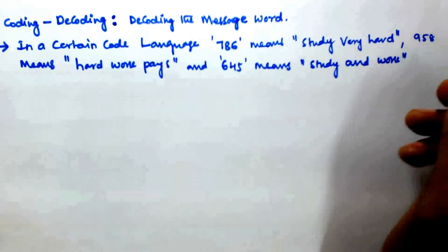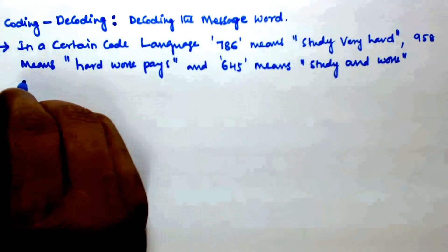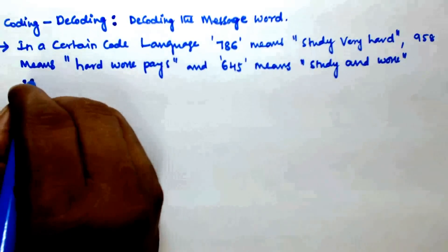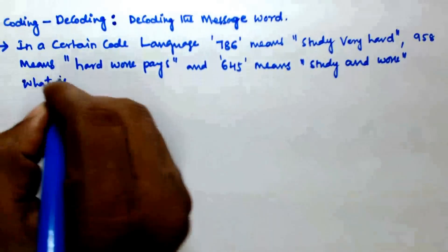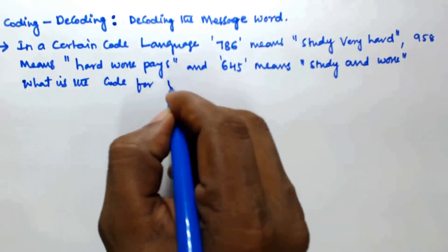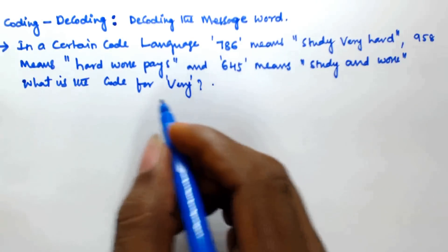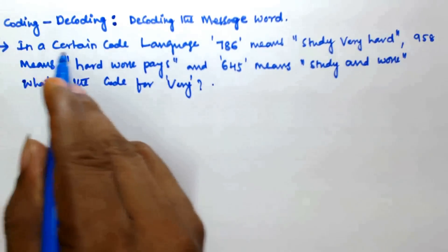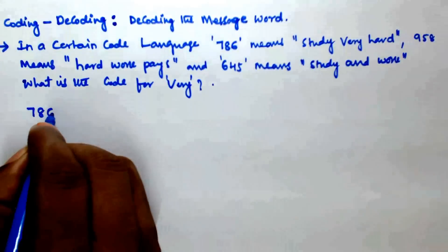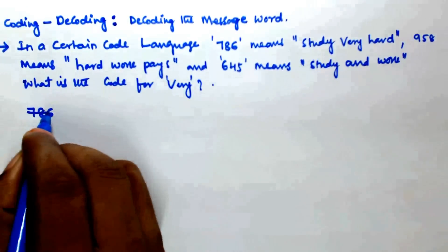So which of the following — we have to find what is the code for 'very'. So we need to identify the code for the word 'very'. In a certain code language, seven eight six means 'study very hard', so let us write this out.